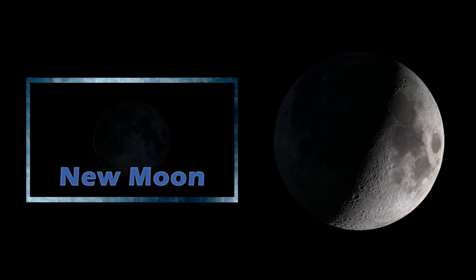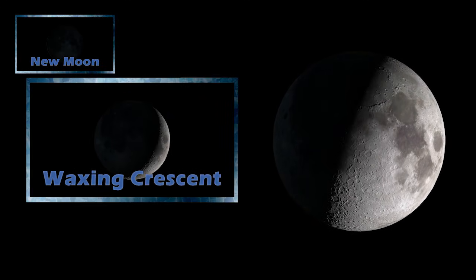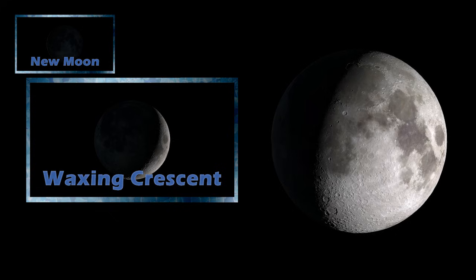There are names for each of the phases of the Moon's 30-day cycle. When the Moon looks completely dark, we're experiencing a new Moon. This is the beginning of the 30-day cycle. It will move through a waxing crescent phase until it is a first quarter Moon.